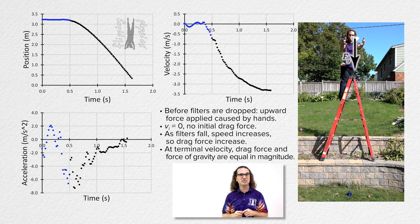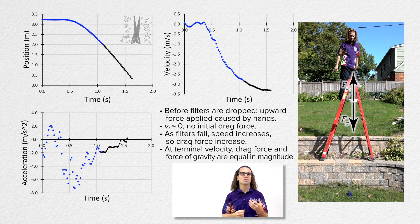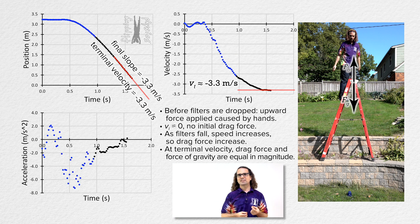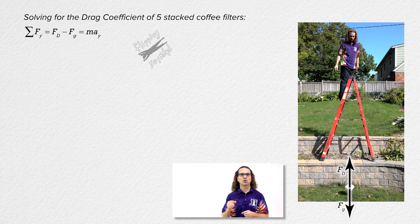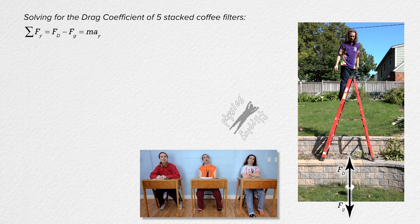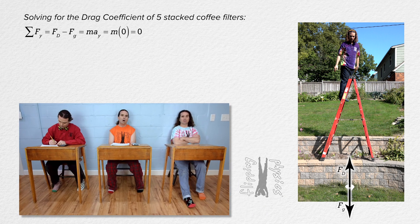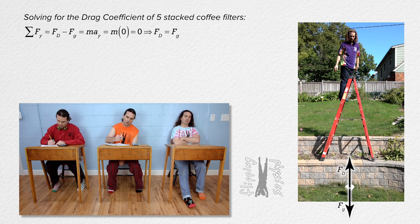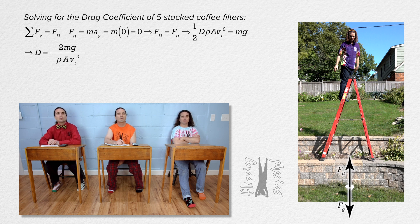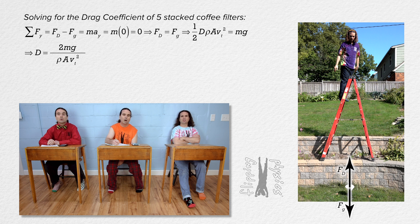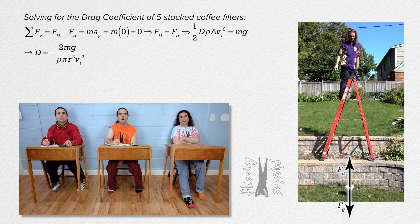We have already determined the terminal speed of five stacked coffee filters to be 3.3 meters per second. Now let's also determine the drag coefficient. Going back to Newton's second law: at terminal velocity, acceleration equals zero, so the force of drag equals the force of gravity. Plugging in equations for both and solving for the drag coefficient gives: C_d equals 2 times mass times g, all divided by the quantity density times pi times radius squared times terminal speed squared.